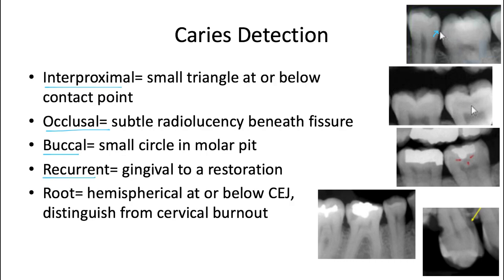For recurrent or secondary caries, this is going to occur under or gingival to an already existing restoration. A bitewing can hide these, especially if they're not too deep. A PA will tend to reveal them thanks to the vertical angulation. So this is one case where a periapical may be even more useful than a bitewing to detect caries.